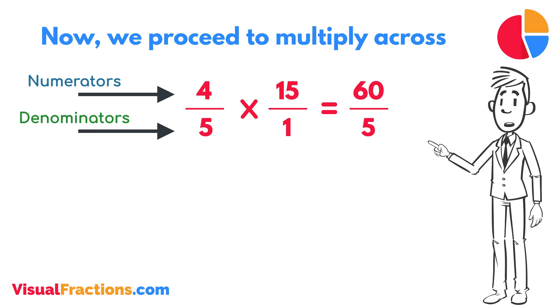We now have a new fraction, 60 fifths. To find the final answer, divide the numerator by the denominator. So, 60 divided by 5 equals 12.